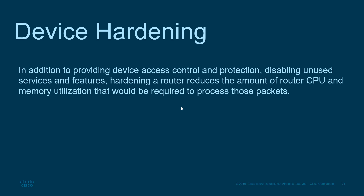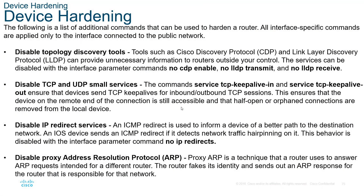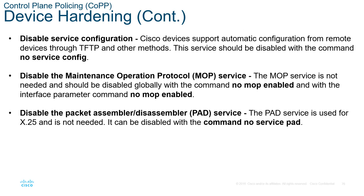Device hardening involves protecting hardware resources — the router and switch's processing and memory. Disable protocols not in use: if your network doesn't use CDP, turn it off. Disable TCP and UDP services like keepalives if unused. Disable ICMP redirect services, proxy ARP if unused, service configuration, maintenance operations, and packet assembly features. Disabling unused services reduces the attack surface.